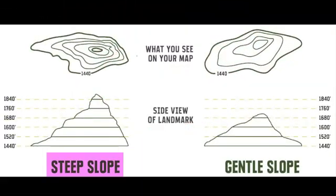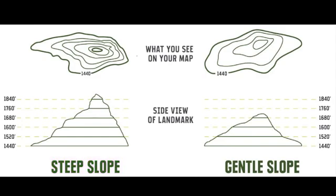Looking at it one other way, you've got the combination of the two maps. On the top, you have a very steep slope and you see how those lines are closer together. And on the other side, you have a gentler slope — it's still a slope, but you see the lines are farther apart. There are fewer lines on the drawing on the right than the one on the left.